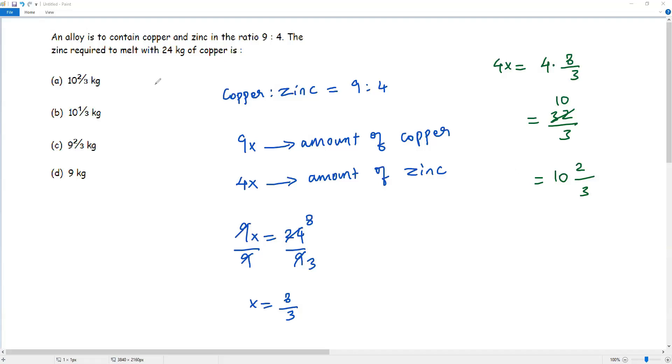So the amount of zinc required to melt with 24 kilograms of copper is 10 and 2 thirds kilograms. The correct answer is option A.